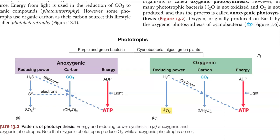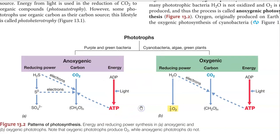Energy is obtained by converting ADP into ATP. In contrast, the other category — the purple and green sulfur bacteria — are referred to as an Anoxygenic group of bacteria. In this group, the reducing power is obtained from hydrogen sulfide. Hydrogen sulfide is oxidized, and as a result, oxygen will not be evolved during this process of photosynthesis. So they are referred to as anoxygenic photosynthetic bacteria.